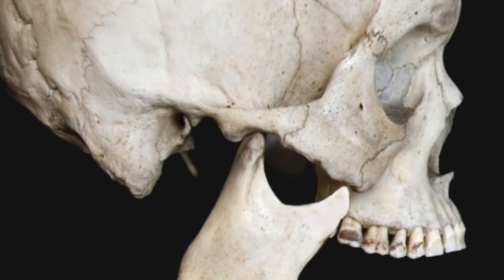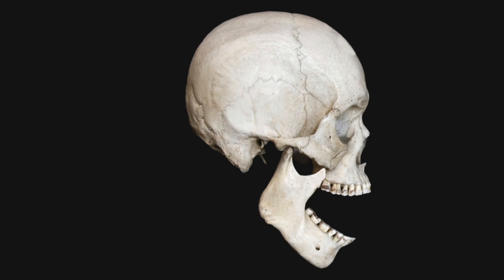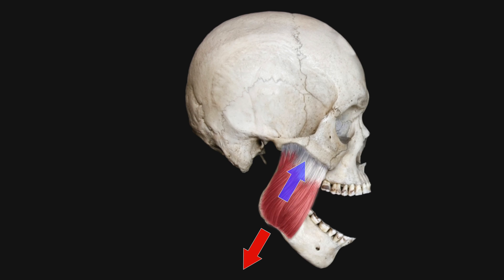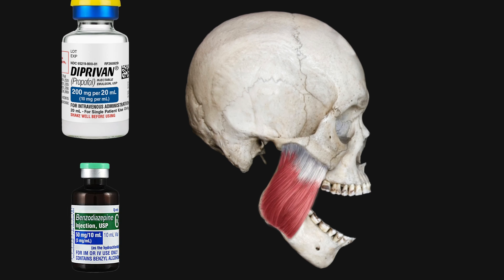In order to reduce this dislocation back into normal position, the jaw must move downwards and back. However, this downward movement is not easy to accomplish because of the masseter muscle, which acts to keep pulling the jaw upward, resisting the downward movement that is required. As such, medications to relax the masseter muscle may be required, including propofol or benzodiazepines.